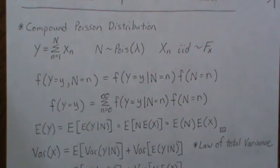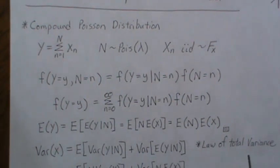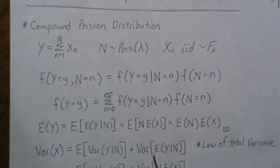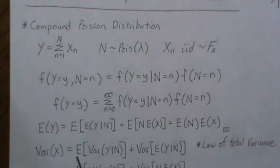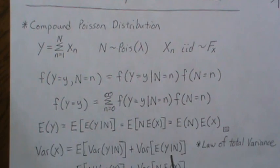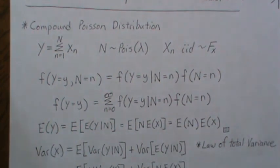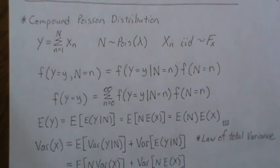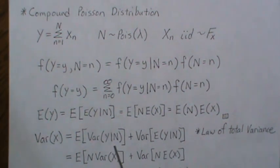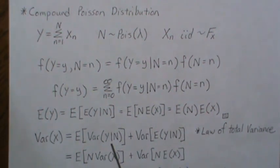To find the variance, we make use of what's called the law of total variance. We won't derive it here, but you can write the variance using conditional expectations: the expected value of the variance of Y given N, plus the variance of the expected value of Y given N. Some refer to these as the explained variance and the unexplained variance.